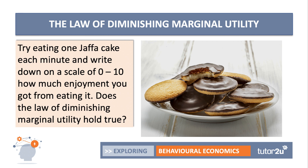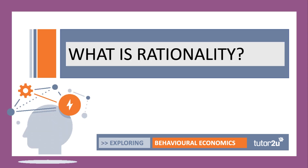Try eating something you quite like — a Jaffa cake perhaps, or some crisps. Try them every minute and write down on a scale of 0 to 10 how much enjoyment you get from it. Don't go too far, but see if the law of diminishing marginal utility holds true. In the next lesson, we'll look at irrationality. But this was a quick look at rational thinking.